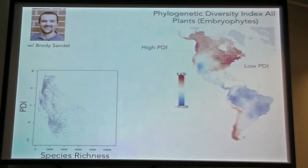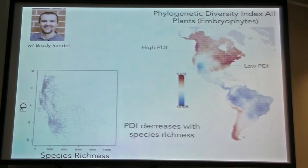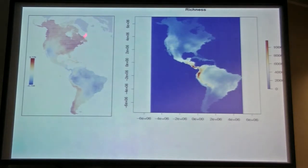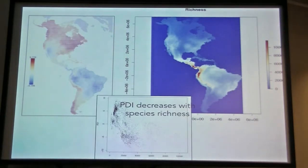Low areas of PDI appear throughout the Amazon but also within the desert southwest. We see this pattern repeatedly within each of the different plant groups — ferns, angiosperms, gymnosperms. We see negative relationships between standing stocks of diversity and phylogenetic diversity in this PDI measure. In general, PDI decreases with species richness — when we compare measures of PDI with standing stocks of diversity, they tend to be more or less mirror images of each other.